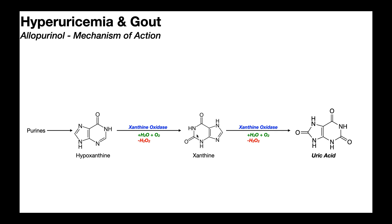You'll notice that in this picture, xanthine has been flipped 180 degrees, but if you follow the carbon atoms, you can see that oxidation reaction. Xanthine oxidase then performs a second reaction on xanthine, oxidizing the carbon of the five-membered ring between the two nitrogen atoms, adding a carbonyl functional group there. This compound is uric acid, also called urate. So again, all purines are eventually degraded to uric acid.